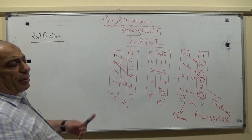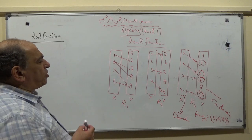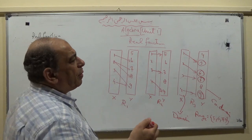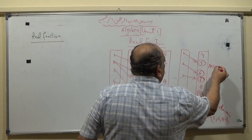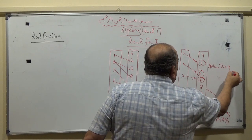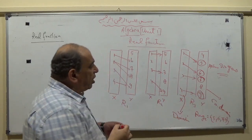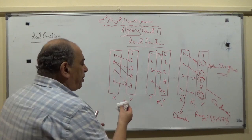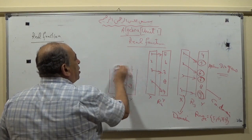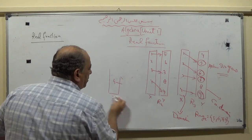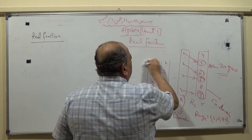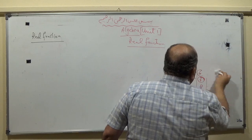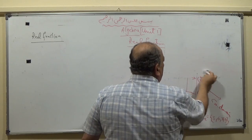This is the first method to represent the function and classify whether a relation is a function or not. Another method is the Cartesian diagram.